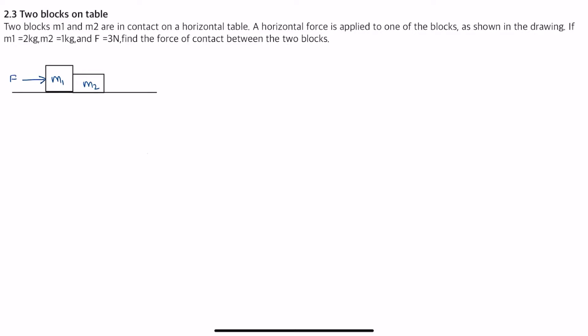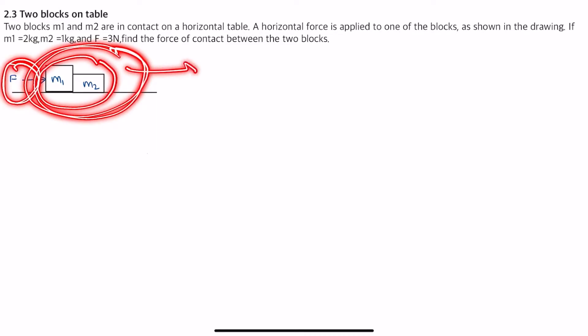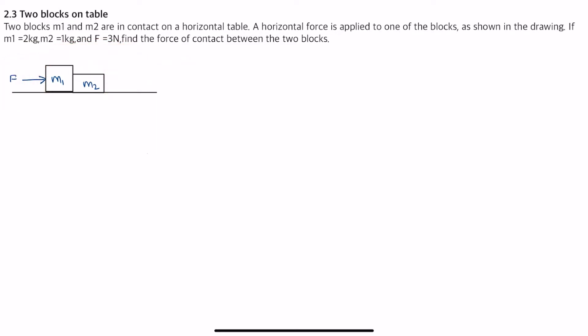So in this video we will be solving problem number 2.3 of Daniel Kleppner and Kolonkow. What the problem says is that I have these two masses m1 and m2 in contact on a horizontal table. A force F is acting on it and then they will move with some acceleration as a whole system. I want to calculate what is the contact force between the two surfaces. So let's solve this problem.